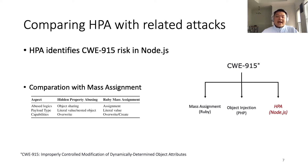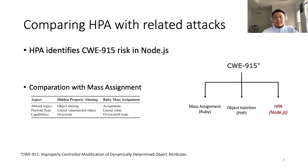Moreover, we find HPA differs from existing vulnerabilities in multiple aspects. Taking mass assignment vulnerability as an example — mass assignment is also a CWE 915 issue in Ruby. However, in mass assignment, the attacker does not pass objects into the program like we do in HPA. Instead, the attacker abuses a platform-specific feature to modify certain existing objects during the assignment operation. Also, the payloads are different: mass assignment payloads are literal values, whereas HPA payloads can be either literal values or nested objects. More importantly, Ruby is a strongly typed language, so mass assignment cannot introduce new properties to victim objects. HPA, however, can insert arbitrary properties, making it more flexible and powerful.